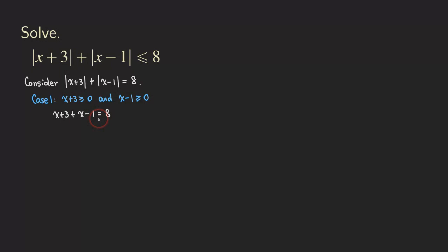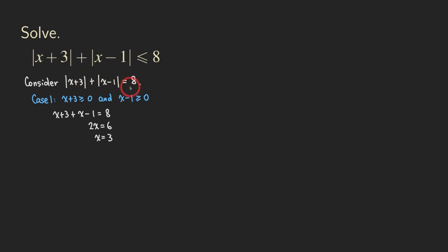Let's solve this basic linear equation. If you add the x's together you get 2x, and then 3 minus 1 is 2, so 8 minus 2 is 6, giving 2x equals 6, so x equals 3. When x equals 3, x plus 3 is 6 — that's positive — and 3 minus 1 is 2, also positive, so this fits under case 1. And 6 plus 2 gives 8, satisfying the equation. So that's case 1.